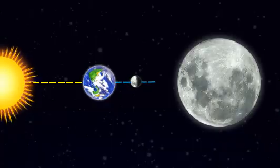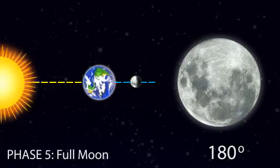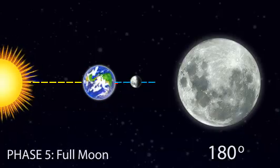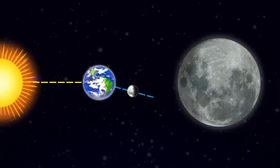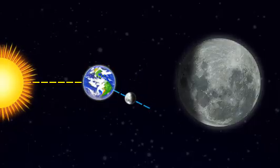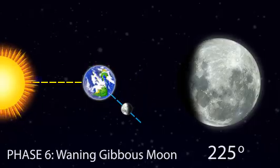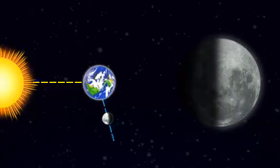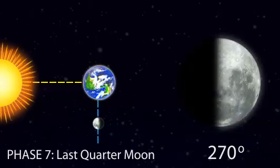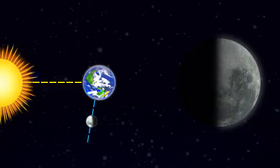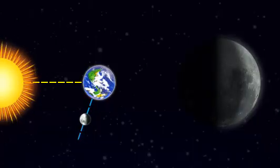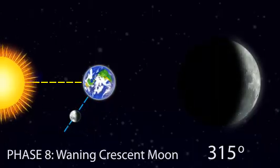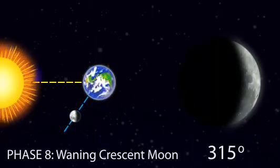At this point, 100% of the illuminated half of the Moon is visible to us. Phase 6 is called the waning gibbous Moon. Phase 7 is the last quarter Moon. Phase 8, the final phase, is called the waning crescent Moon. This is the last phase before the next new Moon.